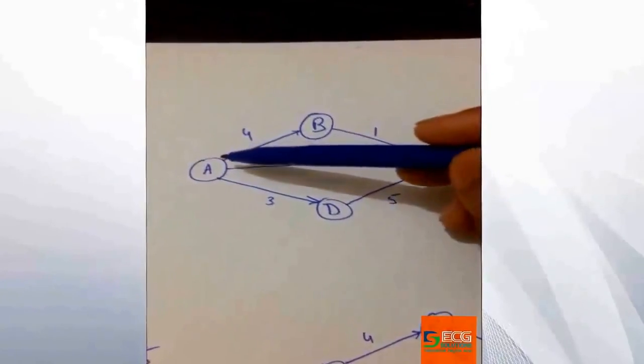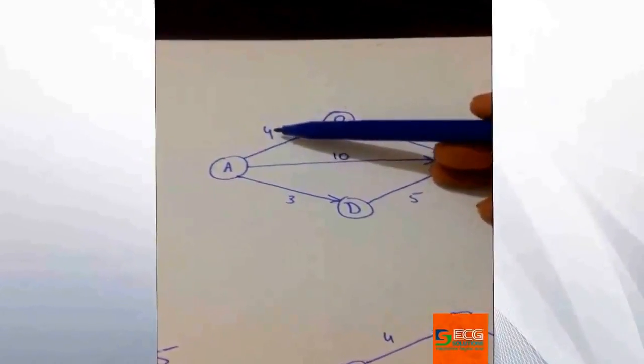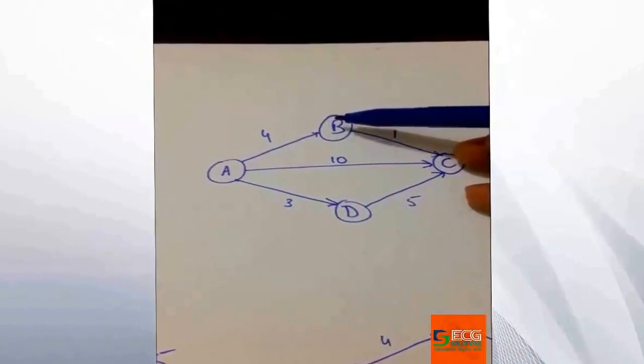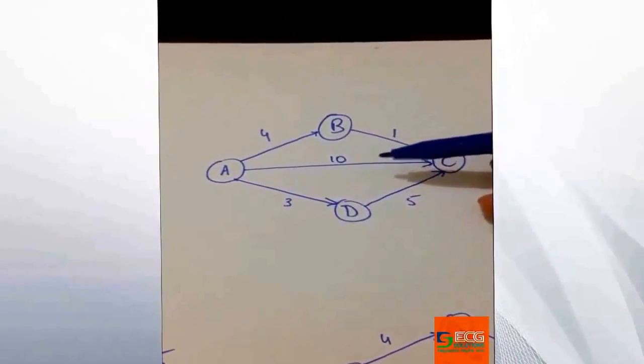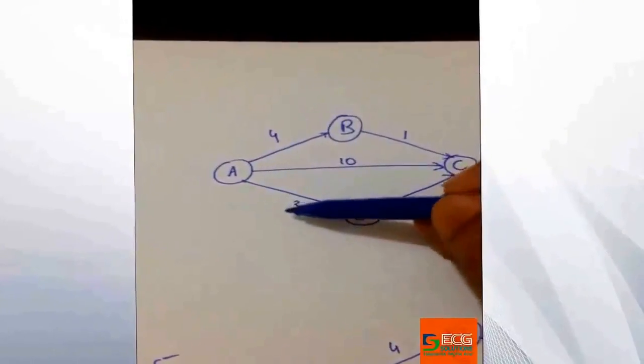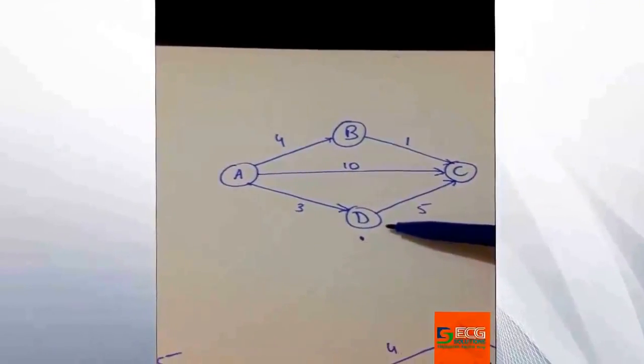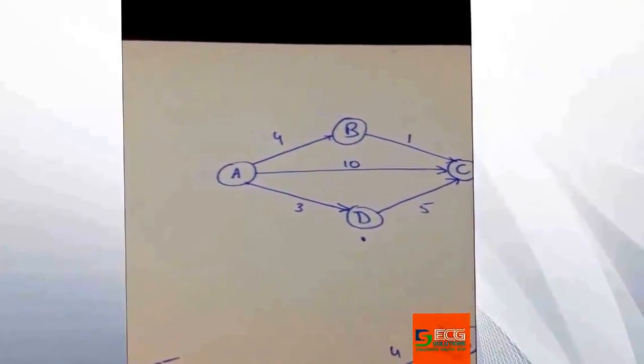If we move from A to B we need to cover 4 kilometers, and if we move directly from A to C we need to cover 10 kilometers. If we move from A to D we need to cover 3 kilometers. So what will the greedy algorithm do? It will choose 3.